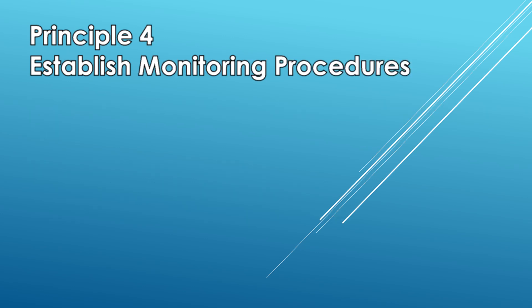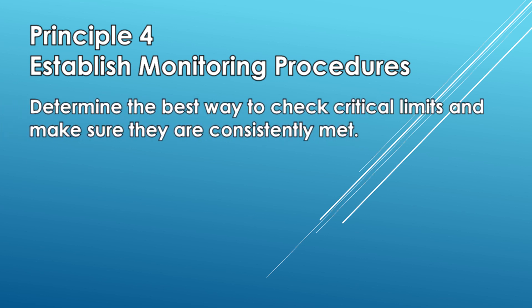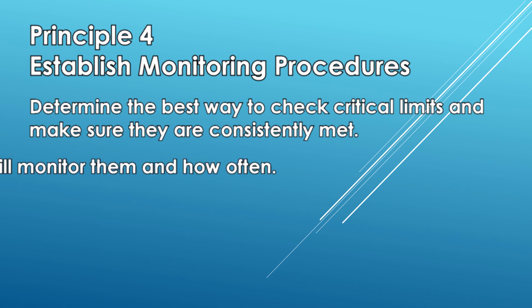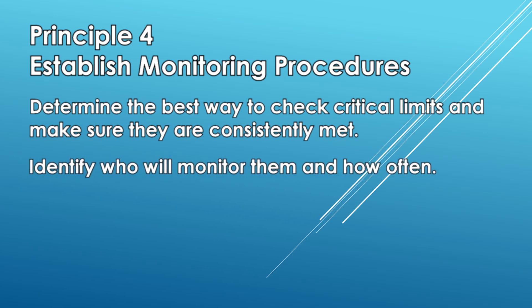Principle 4 — Establish a system to monitor control of CCPs: determine the best way to check critical limits and regularly measure the CCPs to make sure they are within the safe zone. CCPs need to be constantly monitored to make sure critical limits are consistently met and not breached. You also need to identify who will monitor the controls and how often.